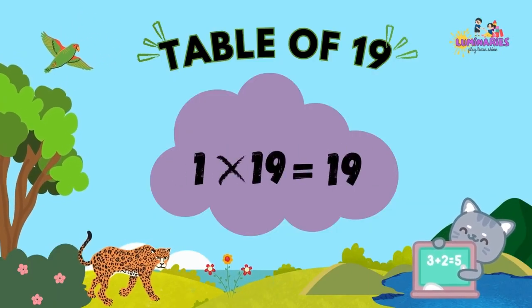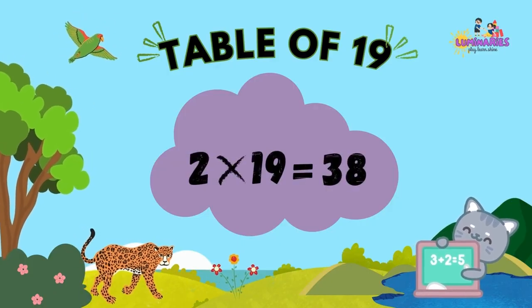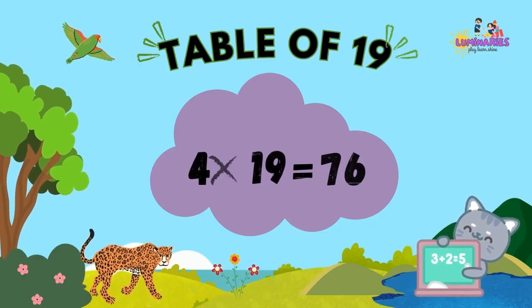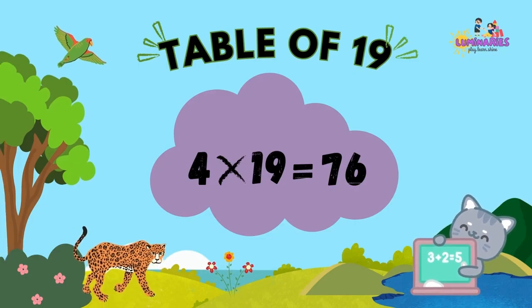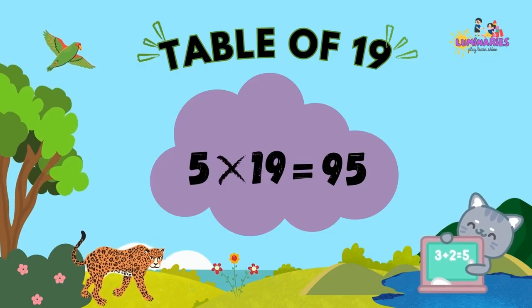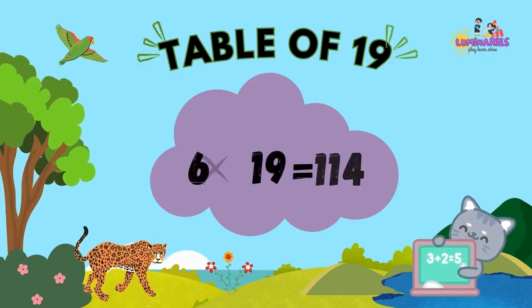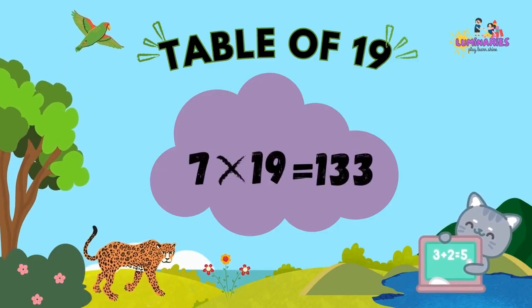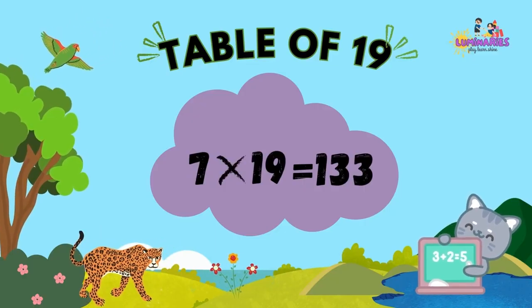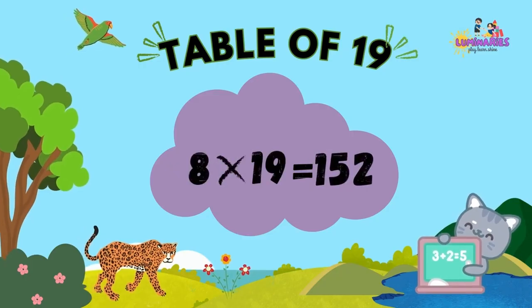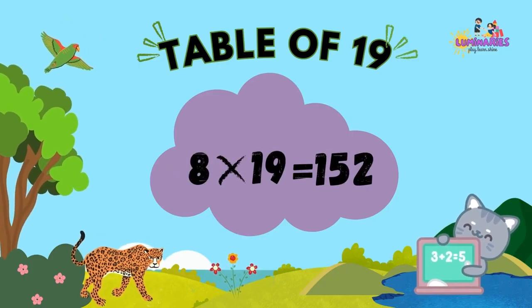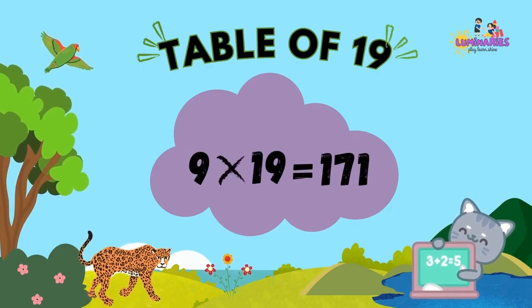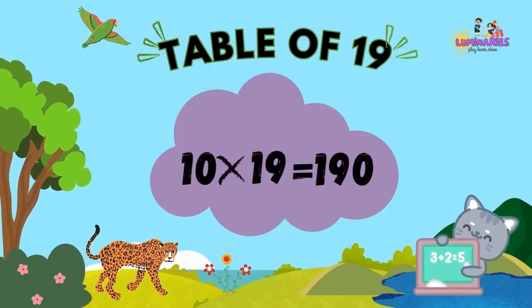Table of 19. 1 x 19 is 19. 2 x 19 is 38. 3 x 19 is 57. 4 x 19 is 76. 5 x 19 is 95. 6 x 19 is 114. 7 x 19 is 133. 8 x 19 is 152. 9 x 19 is 171. 10 x 19 is 190.